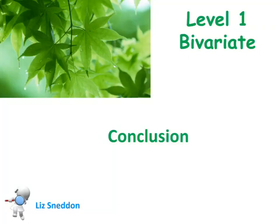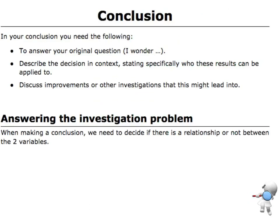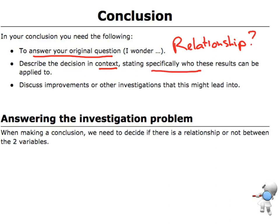Let's have a look at writing up a conclusion for our bivariate assessment. We need to do three things in our conclusion. We need to first of all answer that original question — the question was asking us about a relationship: is there a relationship between two variables? I've got to describe that decision in context, and I've got to be quite specific about who these results can be applied to. And then I need to look for other improvements or other investigations that I could do.